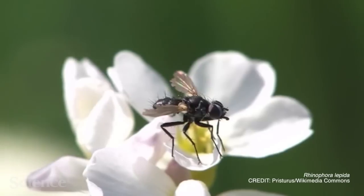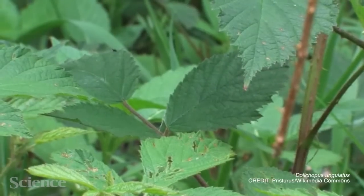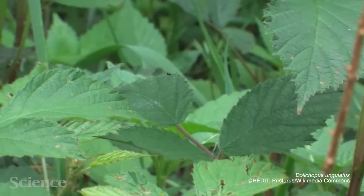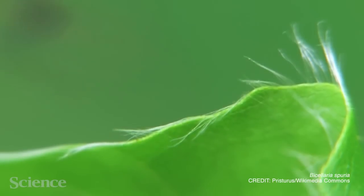Flying insects are some of the most agile, maneuverable creatures on Earth. Able to fly in any direction almost instantaneously, their aerial agility allows them to avoid predators and land on moving objects with precision.